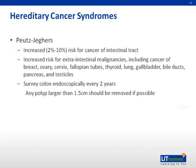Peutz-Jeghers syndrome is associated with an increased risk for cancer of the intestinal tract, with cancers reported throughout the intestinal tract from the stomach to the rectum. There is also an increased risk for extraintestinal malignancies, including cancer of the breast, ovary, cervix, fallopian tubes, thyroid, lung, gallbladder, bile ducts, pancreas, and testicles. The colon should be surveyed endoscopically every two years, and any polyp that is larger than 1.5 cm should be removed if possible.